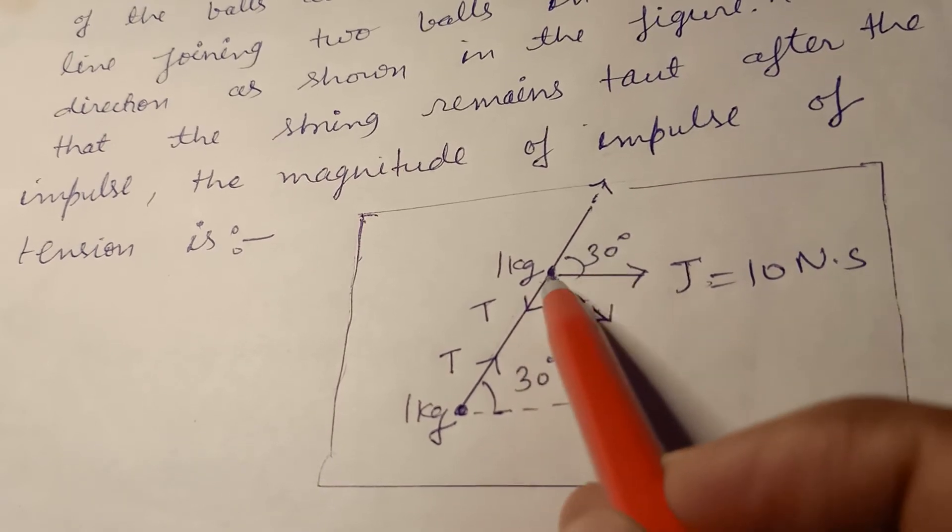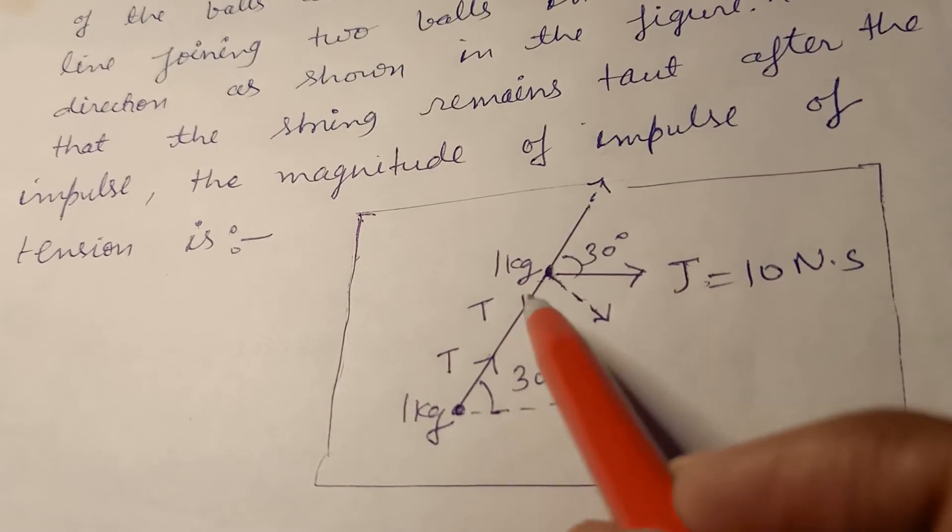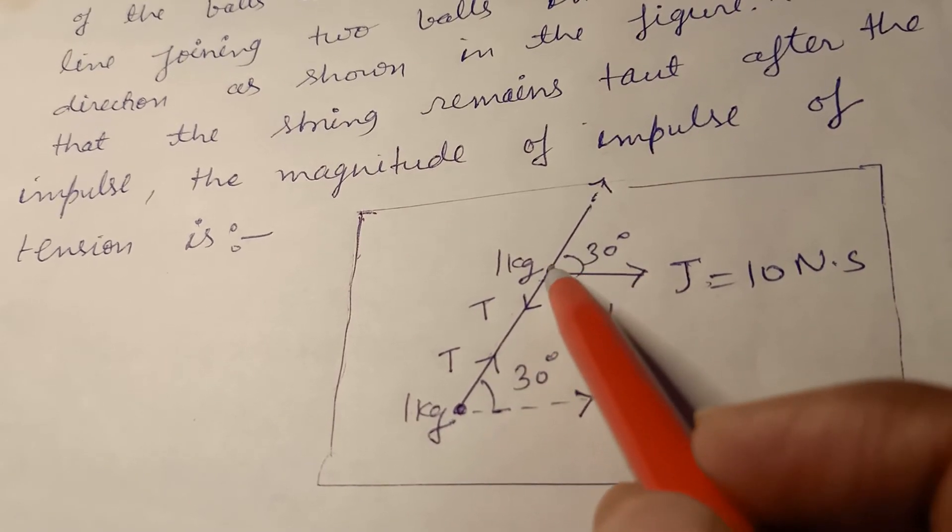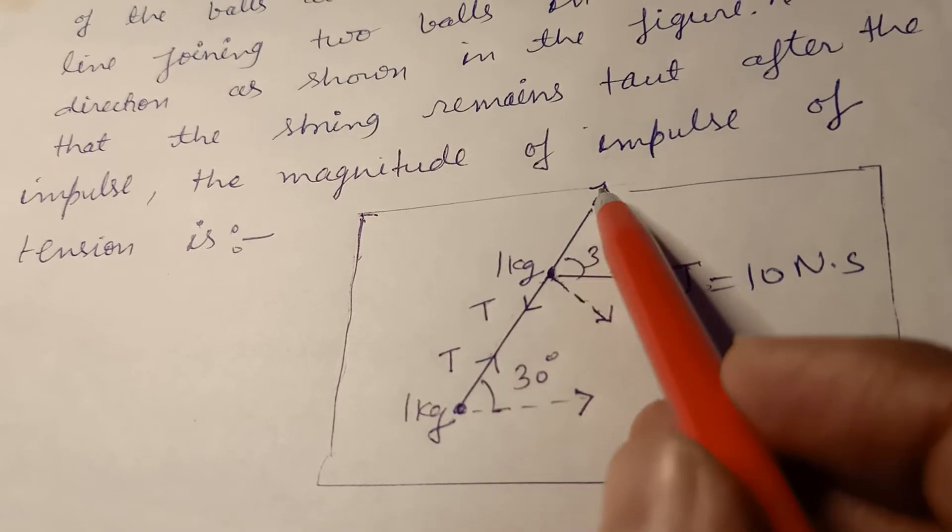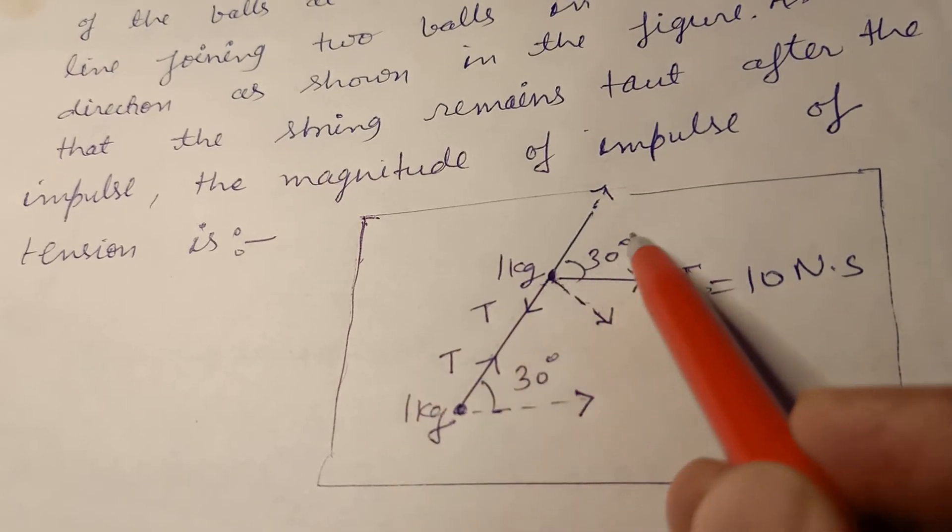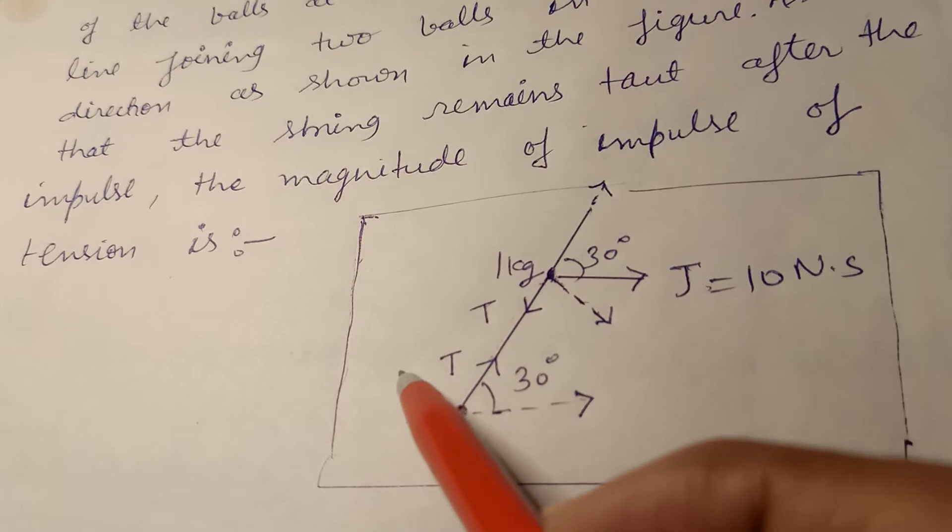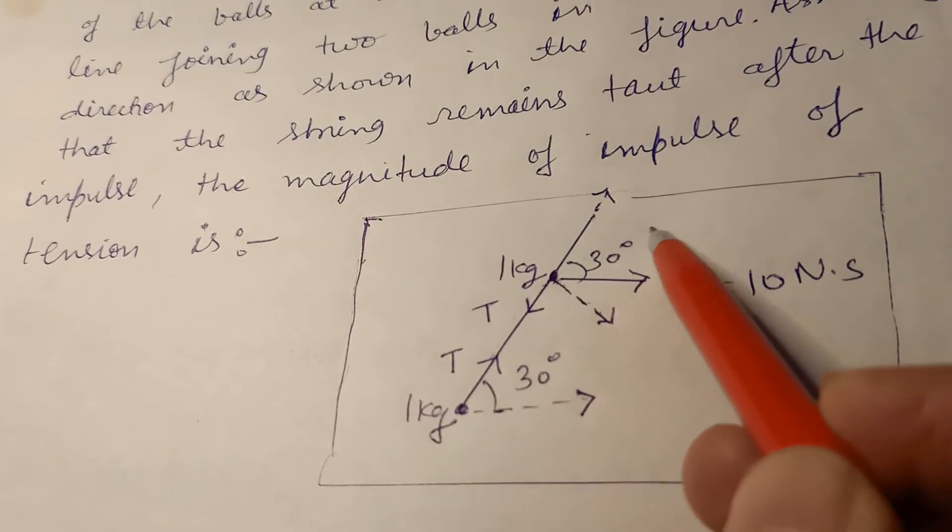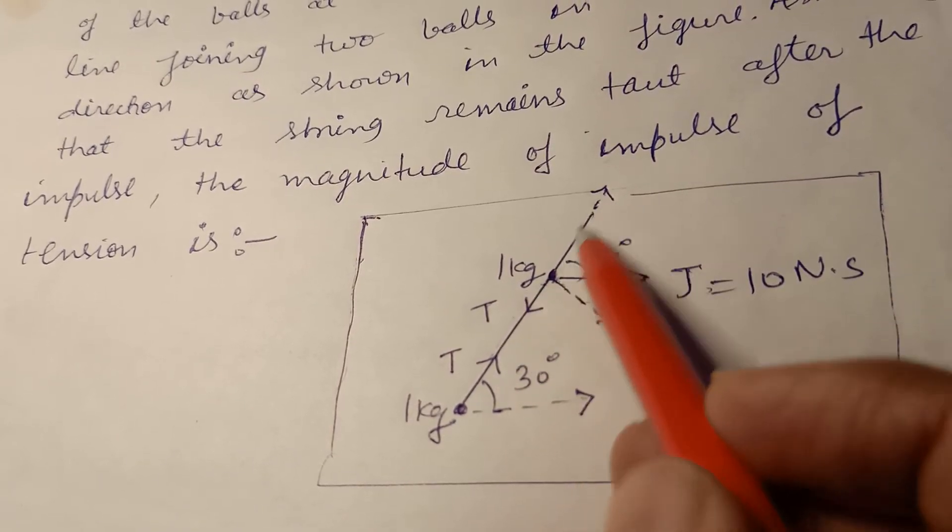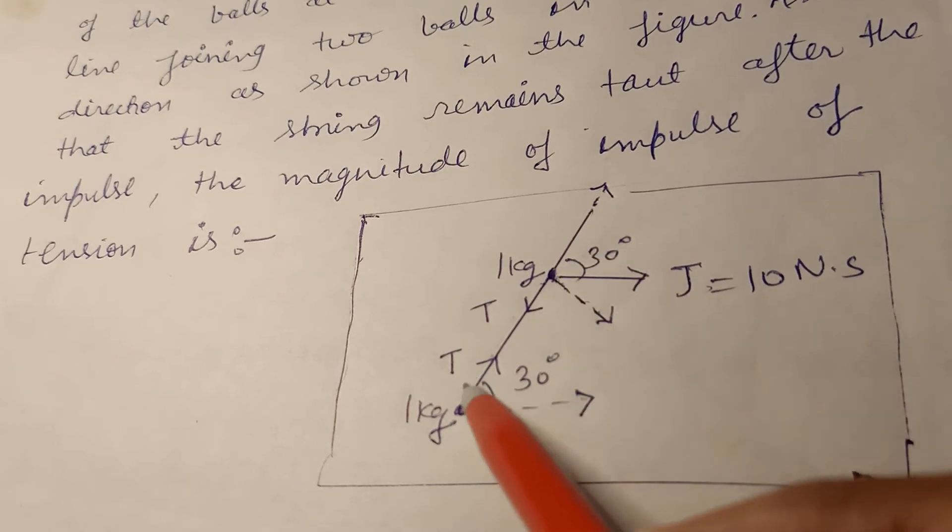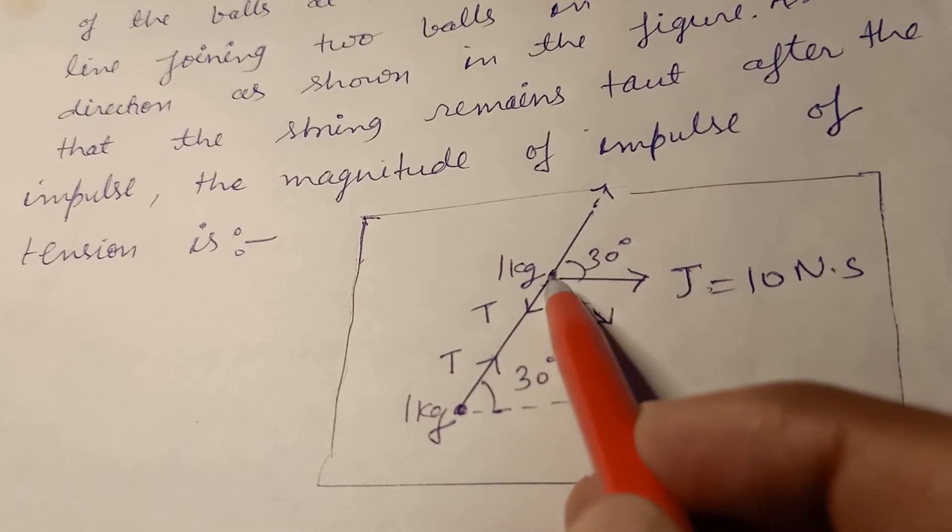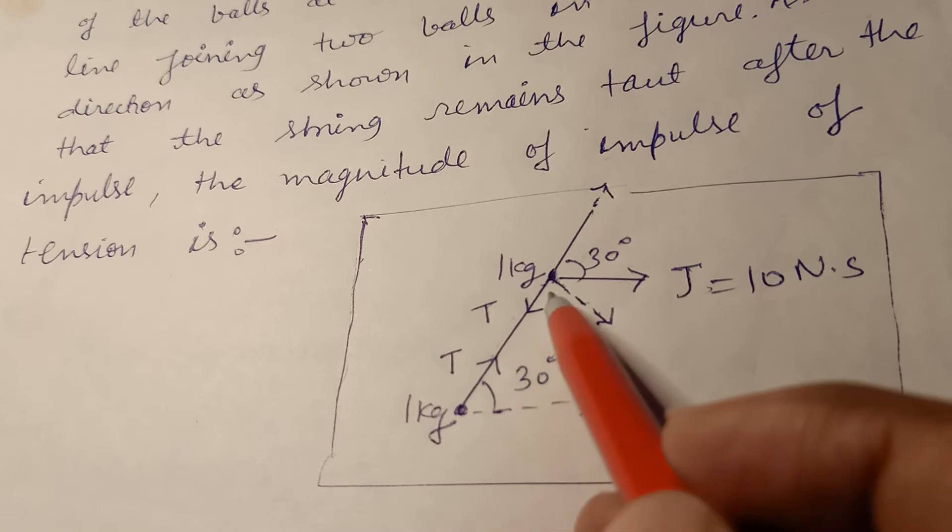You have to think about the motion in the horizontal direction. Let us assume velocity V - this 1 kg ball and this ball move in the same line in this direction.